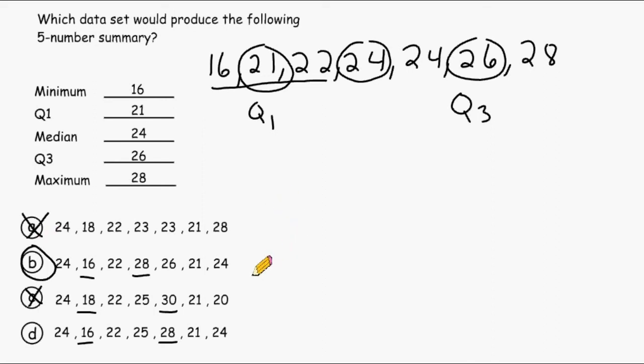But just so we can feel a little bit more confident, let's look at choice D anyway. So I'm going to place this data in order starting with 16. After 16 we have 21, and then we have a 22, and we have two 24s. And after the 24s we have a 25 and a 28.